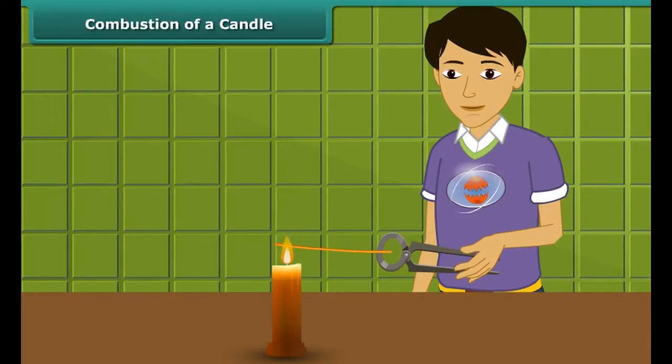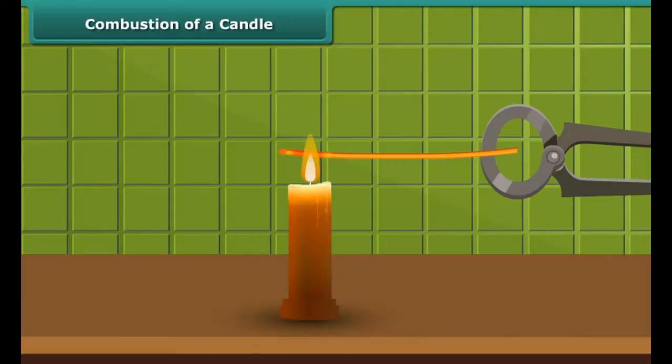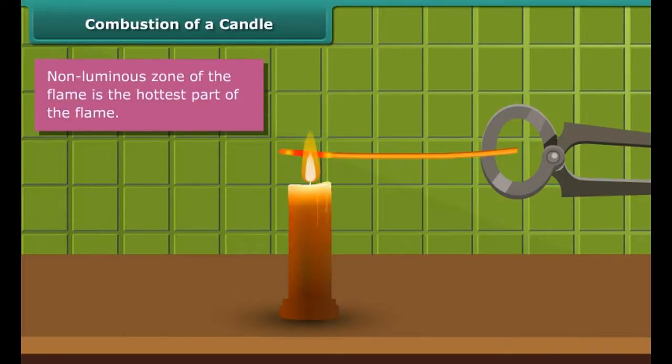The portion of the copper wire just outside the flame is getting red hot. This indicates that the non-luminous zone of the flame is the hottest part of the flame.